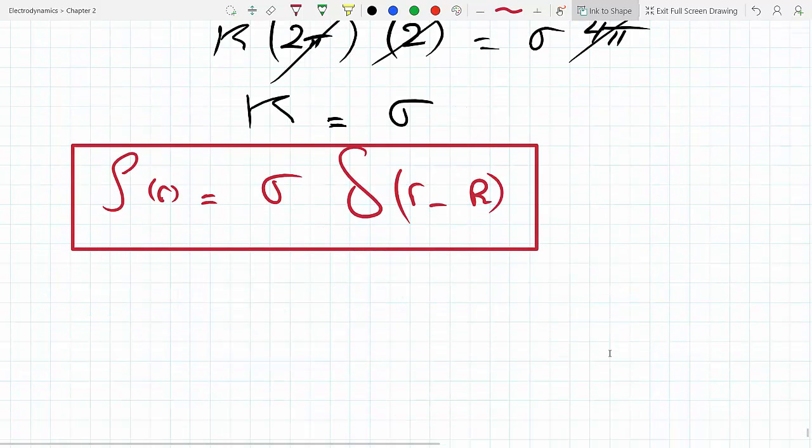This is in coulombs per meter squared, and we said that the Dirac delta function is 1 over meter, because when you multiply it by dr, which is in meters, you're supposed to get dimensionless. So 1 over meter times meter gets you nothing.